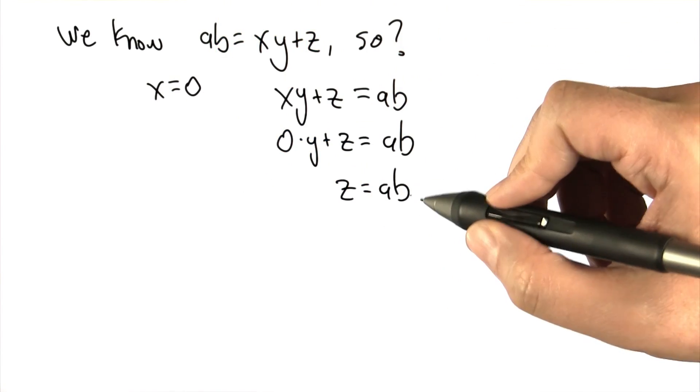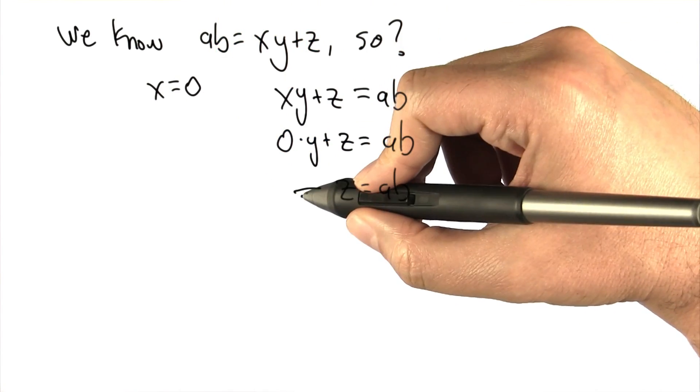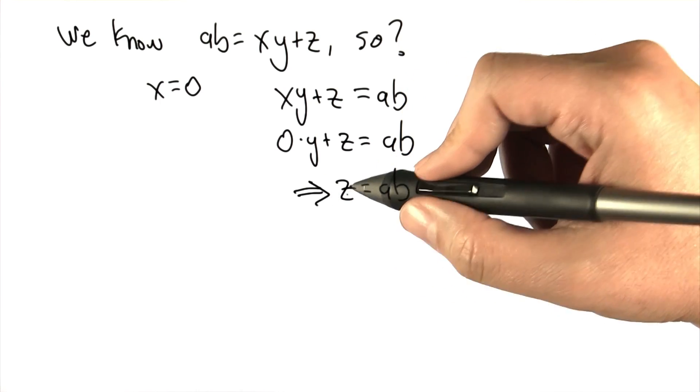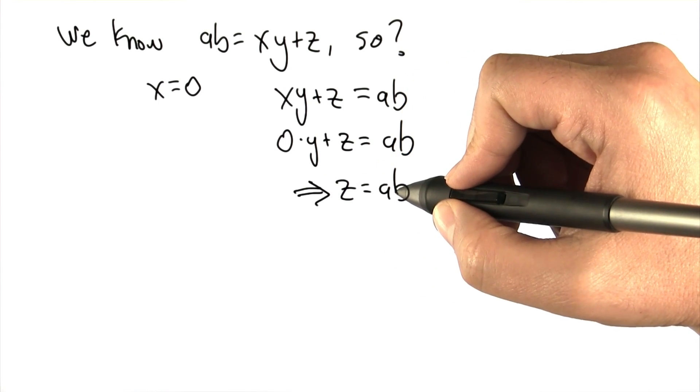so this is actually saying that Z has to be equal to AB at the end of the loop. Once X reaches 0, Z has to equal AB. Keep in mind, that's exactly what we return, the value of Z. So the thing that is returned is going to be A times B.